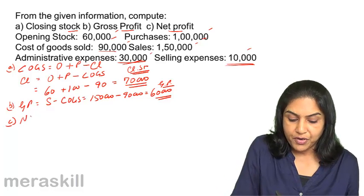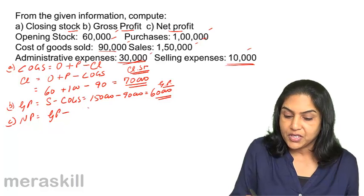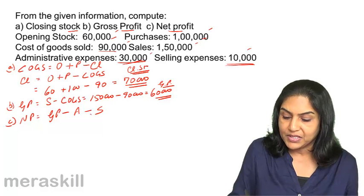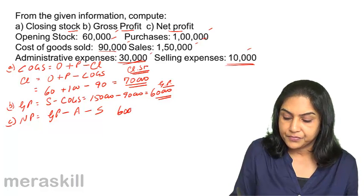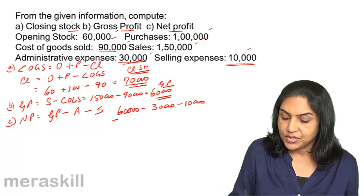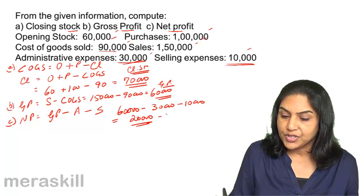So, net profit is equal to gross profit minus administrative expenses minus selling expenses, that is 60,000 minus 30,000 minus 10,000, that is equal to 20,000. So, 20,000 is your net profit.